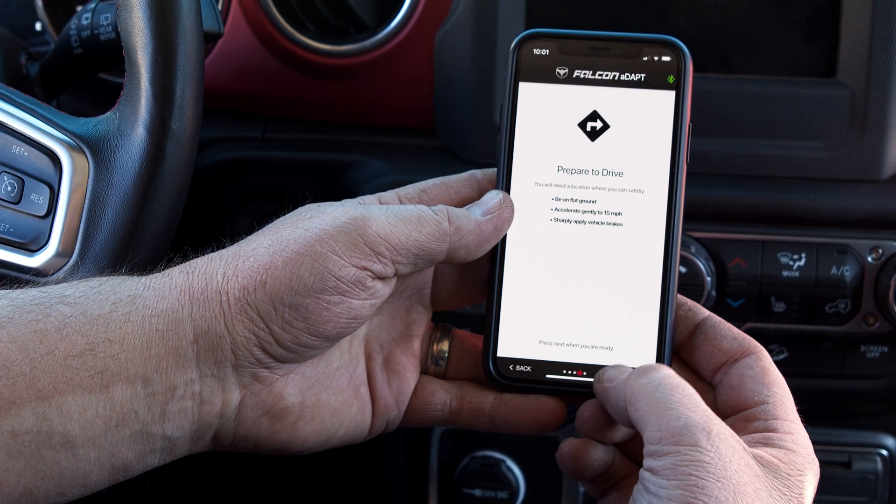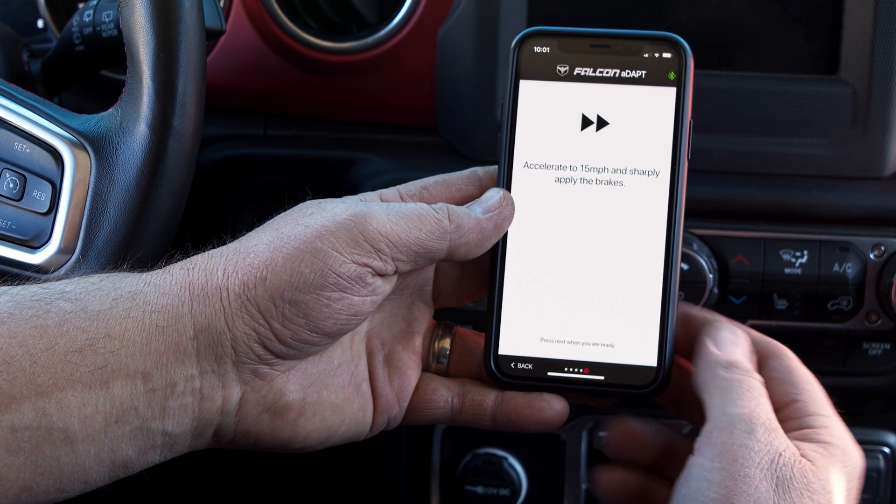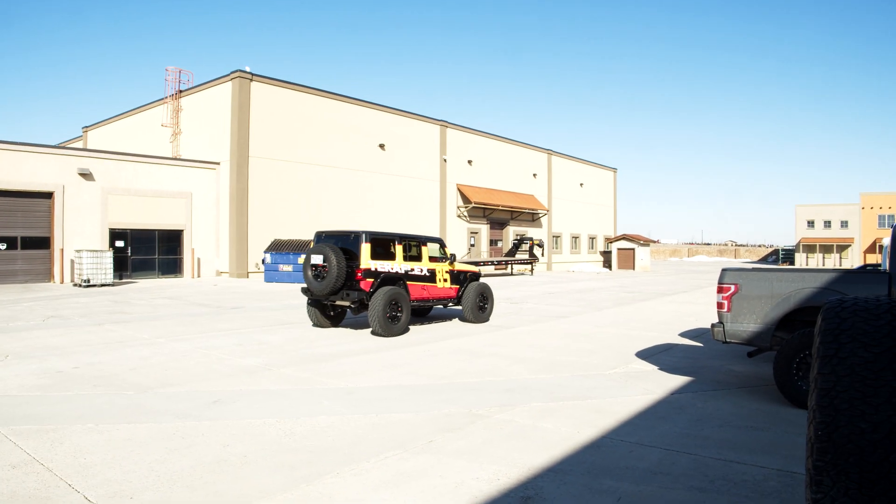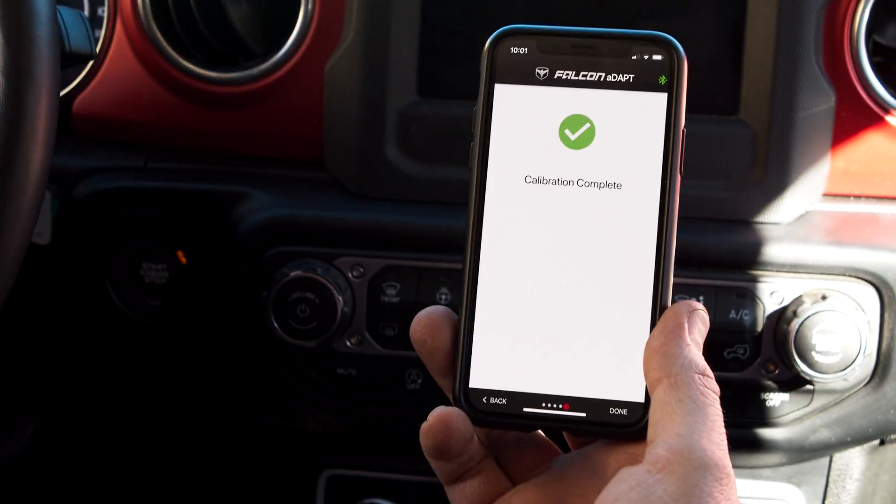With the Jeep on level ground, you will need to accelerate to 15 miles an hour and stop suddenly. Do not manipulate the app while the vehicle is in motion.